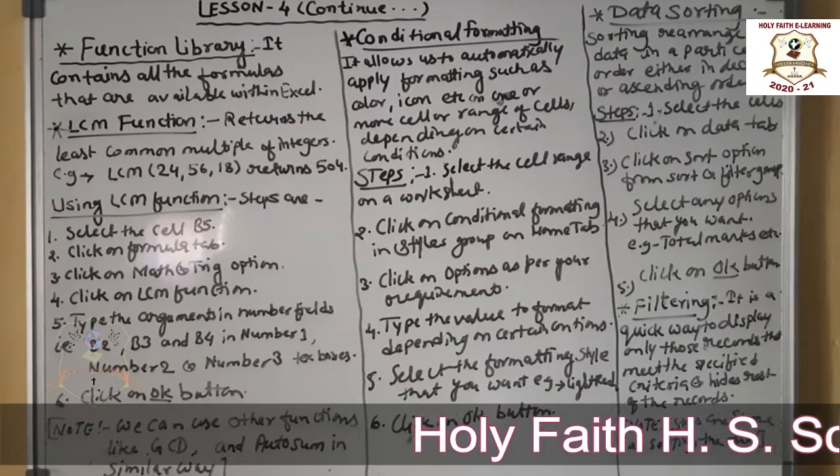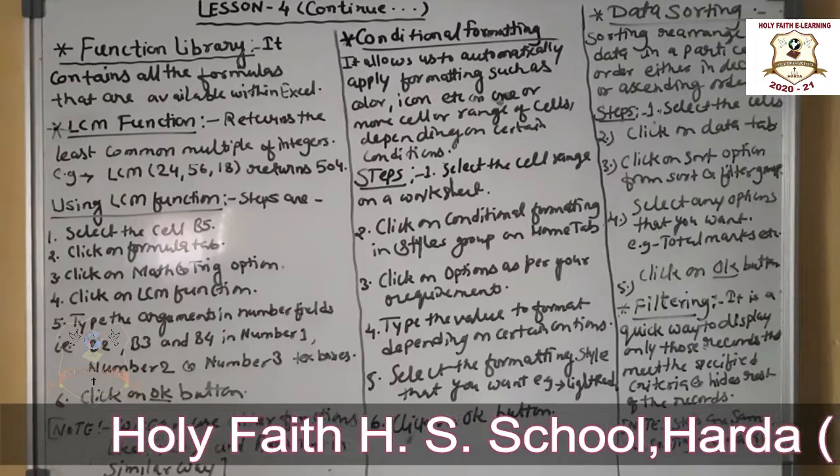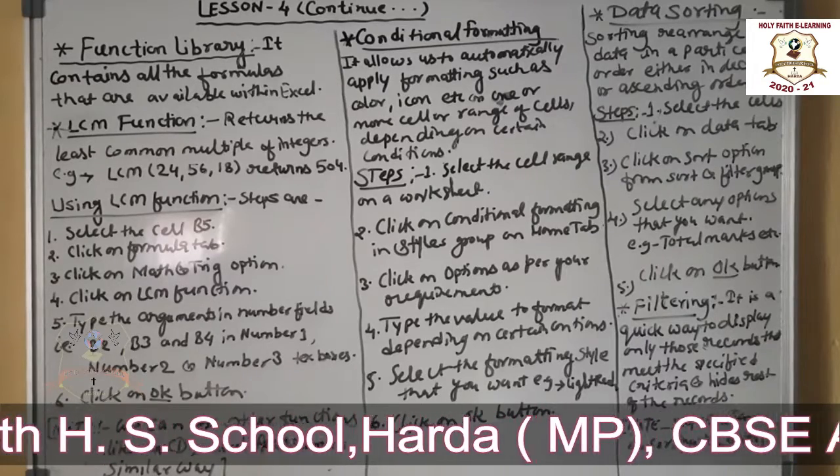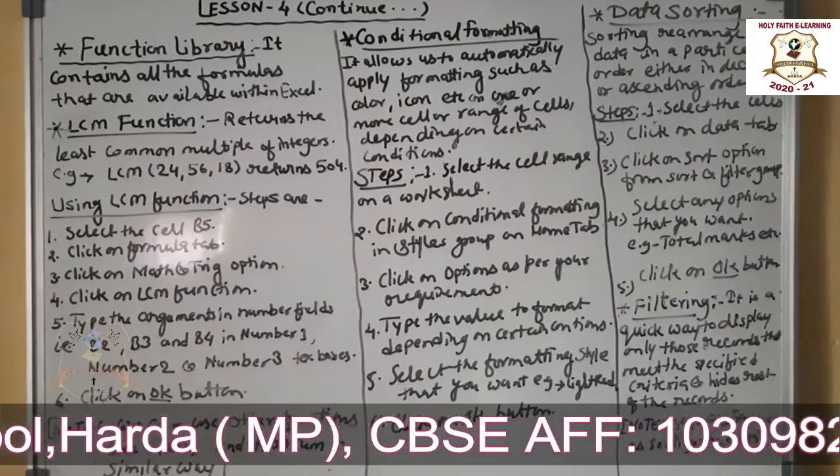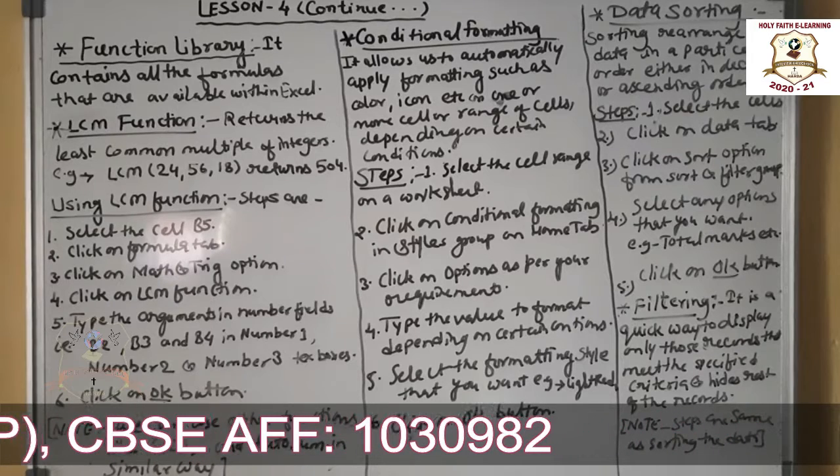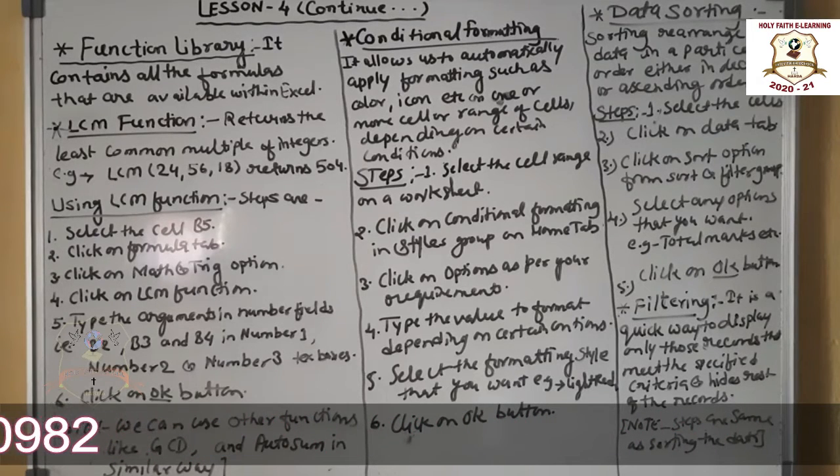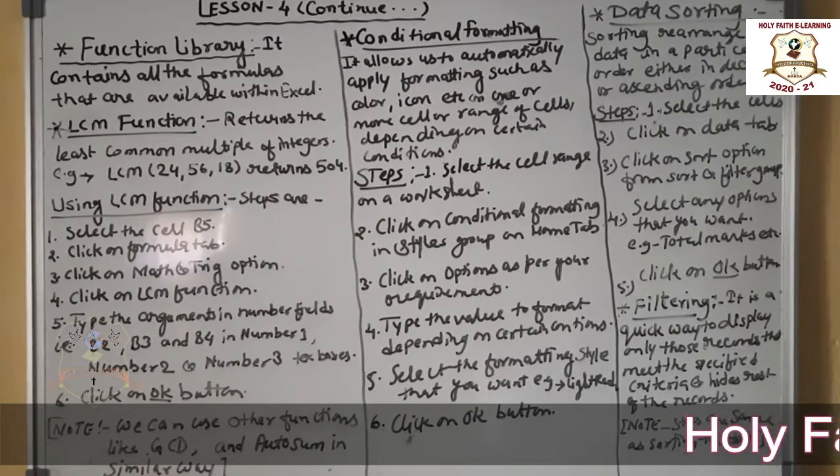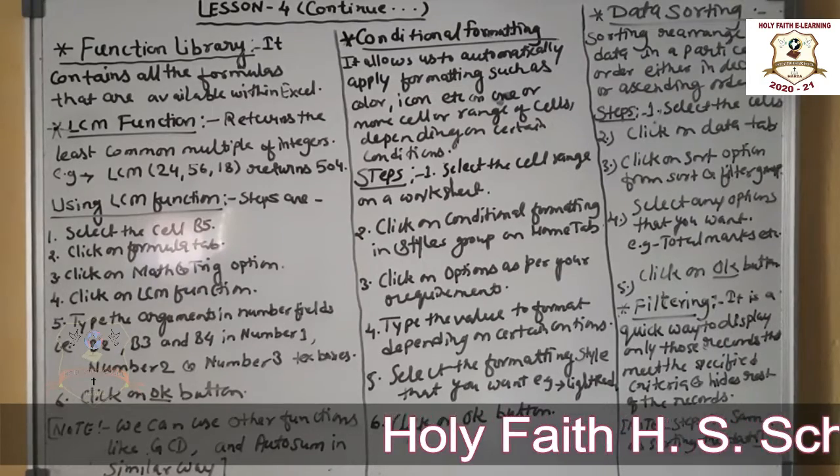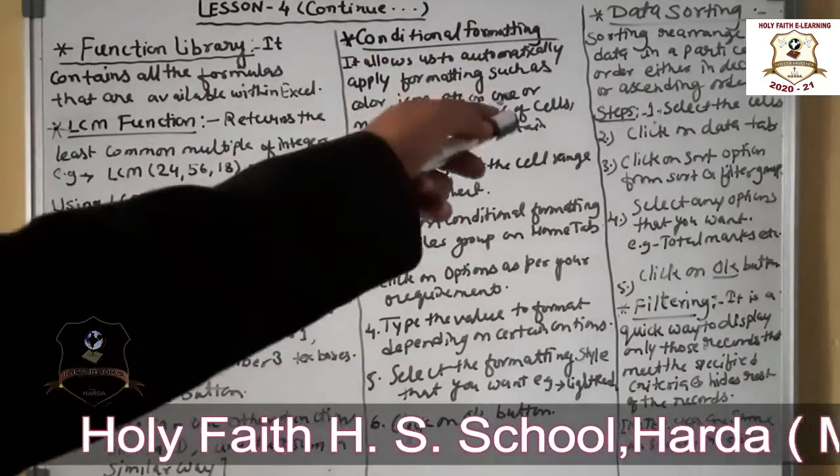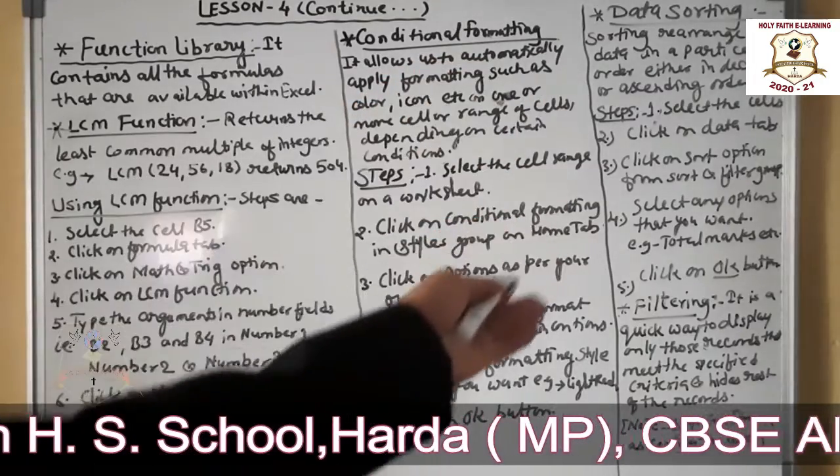One more topic is advanced filter option. Advanced filter is used to create a list of unique items, to extract specific items to a different worksheet. You can also use complex criteria with each advanced filter. That is how advanced filters work.